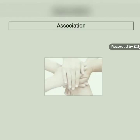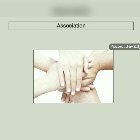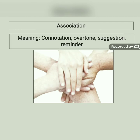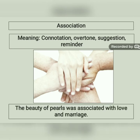The next word is association, which in Bangla means bhavonushango ba yukta. In English, similar words are connotation, suggestion, reminder. For example: the beauty of pearls was associated with love and marriage.